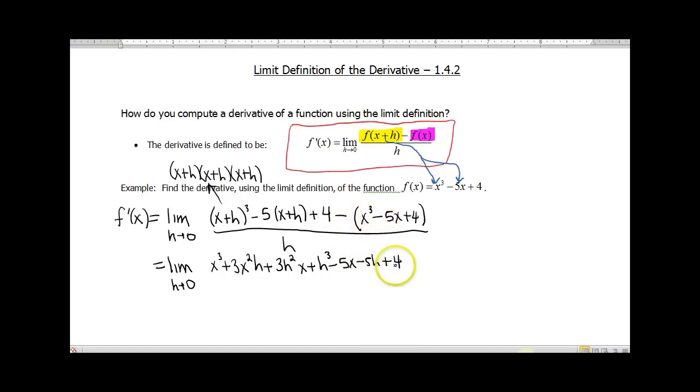And then last up here in the numerator, we need to distribute our negative sign. So -x³ + 5x - 4. And all of this is divided by h.